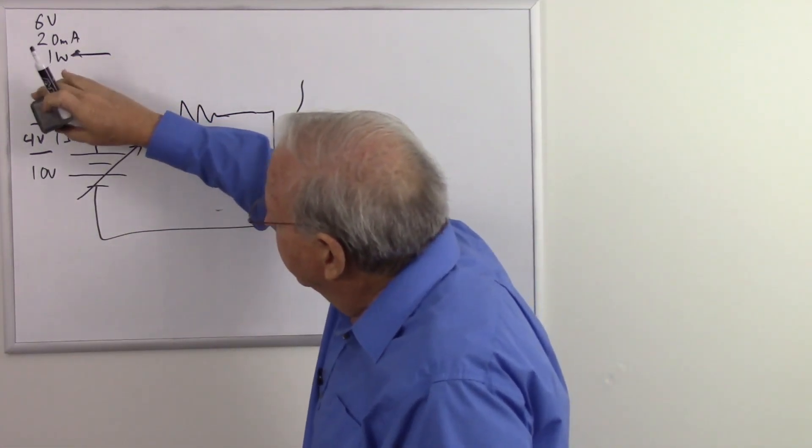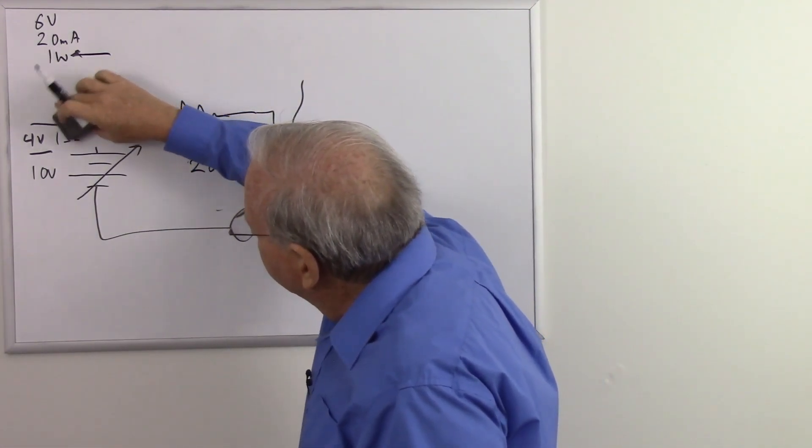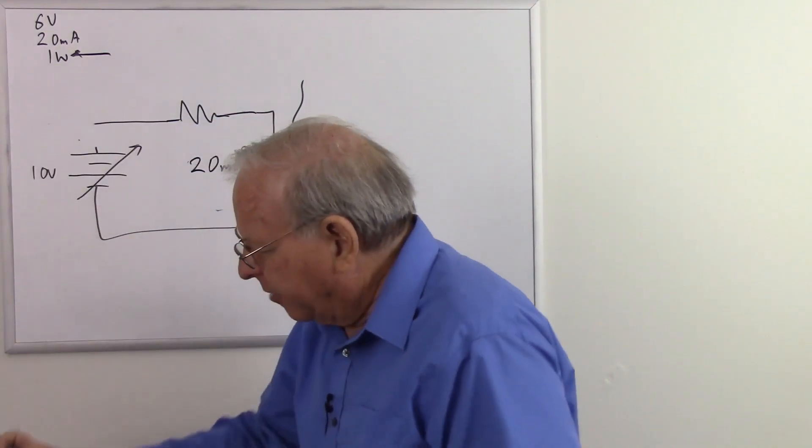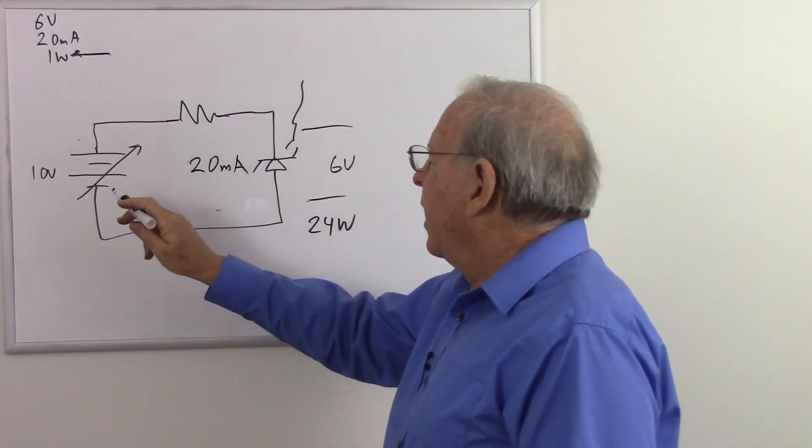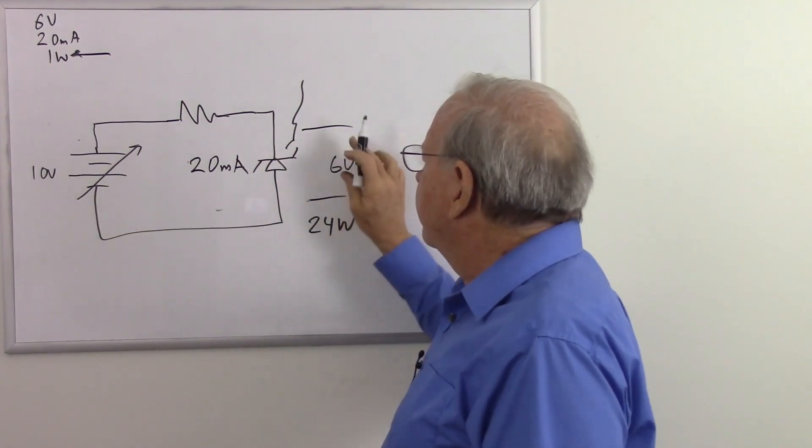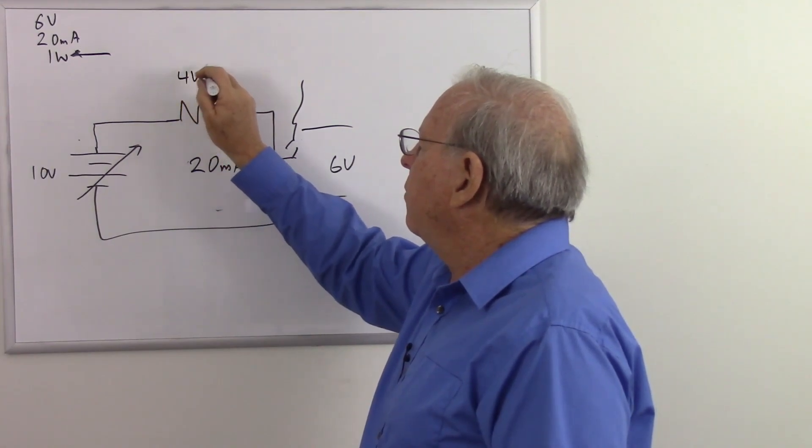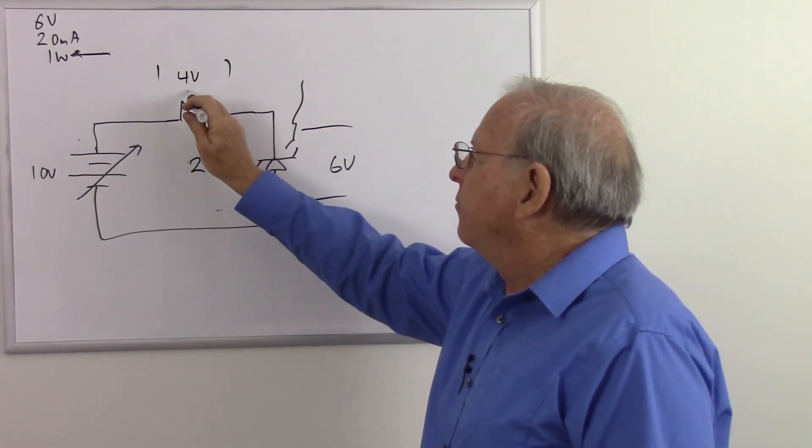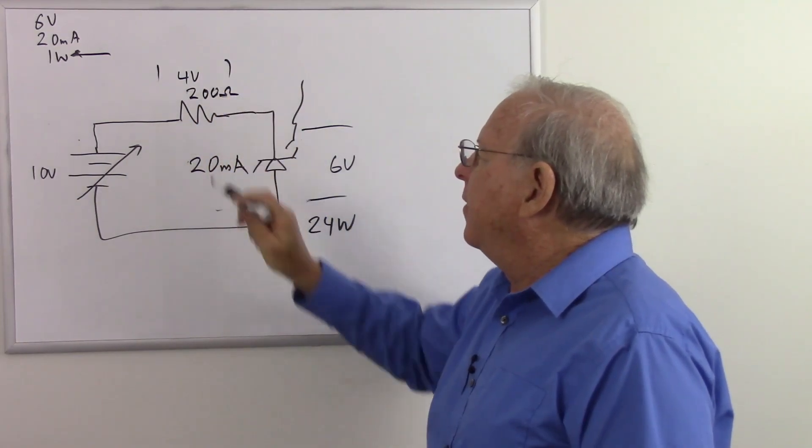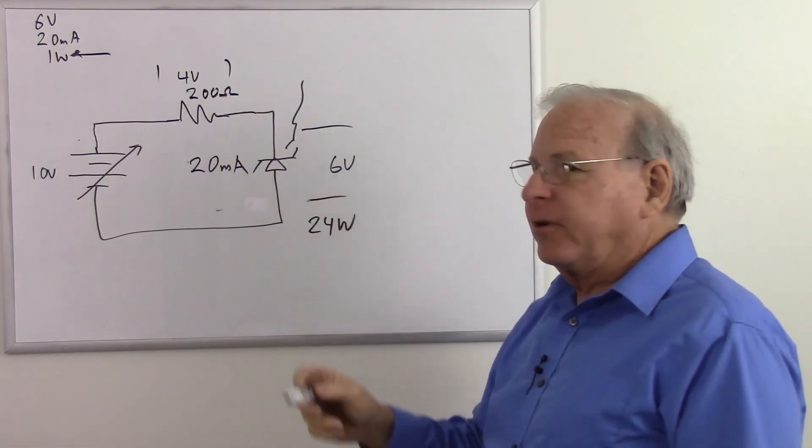So we need a resistor that will give us that 20 milliamps. Once again, if we ignore our internal resistance again, as we usually do, because it's usually small enough to ignore. So now we have, once again, 6 volts, 10 volts. So 6 plus 4 volts adds up to 10. 4 volts divided by 20 milliamps gives us 200 ohms. And there is the proper setup for this particular Zener diode.